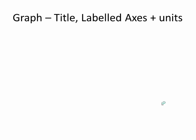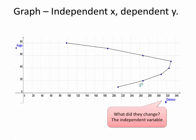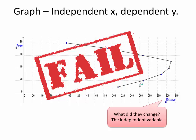The next thing is the graph. It must have a title, labeled axes, and units. This is the worst graph I've probably seen for a long time. Get the variables the right way around: the x-axis, the horizontal variable, is what they changed. They didn't change the distance — they changed the angle. So these are basically the wrong way around. The independent variable is the angle, not the distance. Fail.